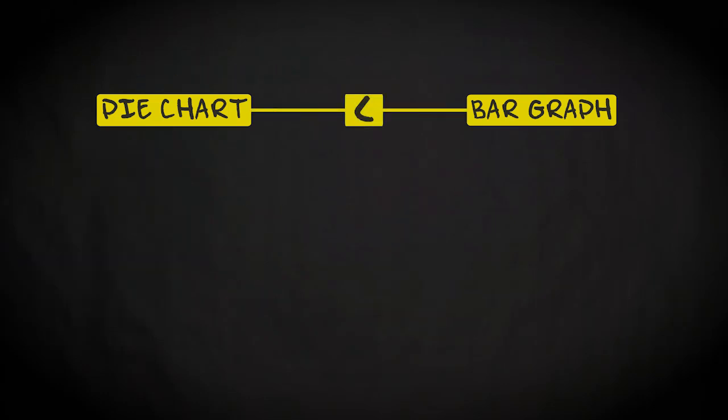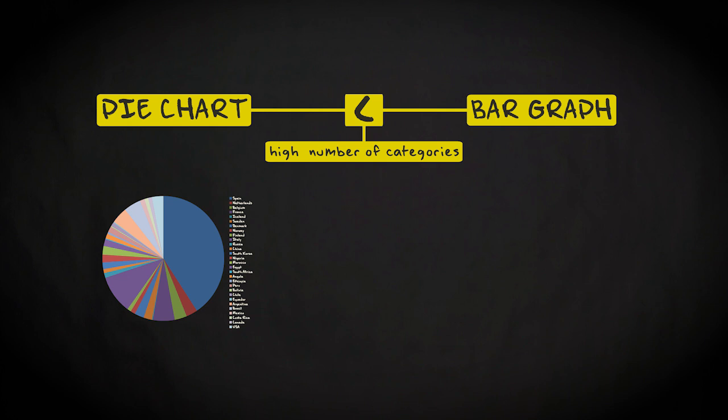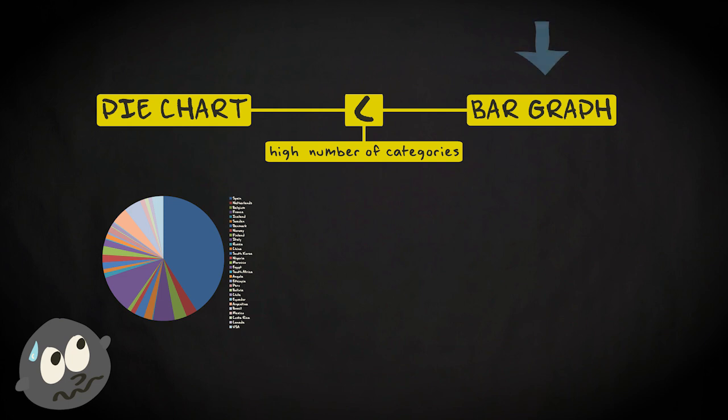A bar graph has advantages over a pie chart if the number of categories of a variable increases. Imagine, for instance, that you don't want to know which continent the football players come from, but that you want to know in which particular country they were born. This pie chart displays the results. As you can see, it is very, very messy. You might like all the colors and small pies for aesthetic reasons, but all this information does not make the graph easy to understand. In this case, it would make more sense to make a bar graph.